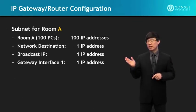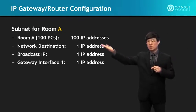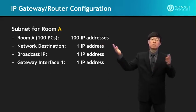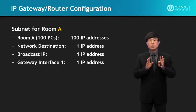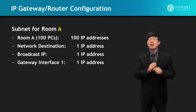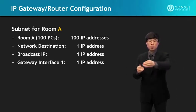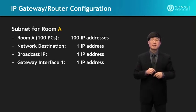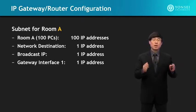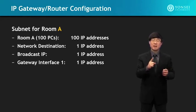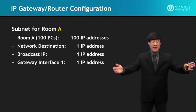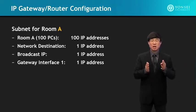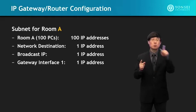Since the subnet size is 128, and 2 to the power of 7 means the 32-bit subnet mask will have the last 7 bits as zeros and the rest as ones, the subnet mask will be 255.255.255.128. The lowest IP address is assigned to the network destination, the highest IP address is for broadcast, and the second highest is assigned to the gateway interface 1. The IP addresses for room A will be off of 165.132.9, from .0 (network destination) through .1 to .100 for the PCs, with .126 for the gateway interface and .127 for broadcast.